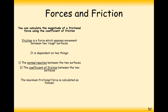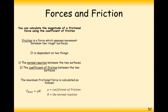The maximum value of the friction force is calculated as F_max = μR, where μ is the coefficient of friction — a property of the surface, generally between 0 and 1. Zero means no friction and one means lots of friction. R is the normal reaction force, which is finally coming in useful.